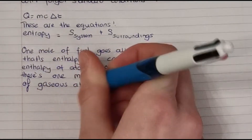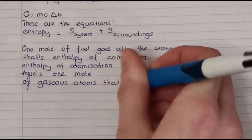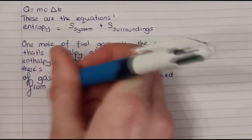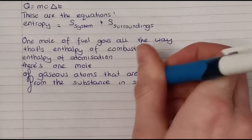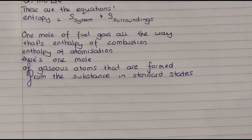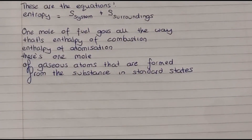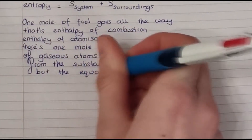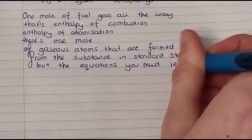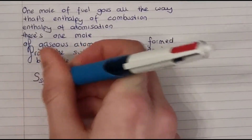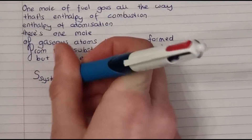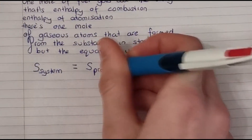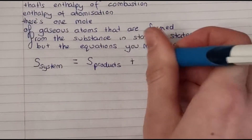Q equals MC delta T — these are the equations. Entropy equals S system plus S surroundings. One mole of fuel goes all the way — that's Enthalpy of combustion.